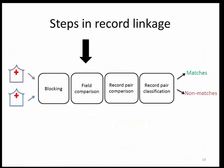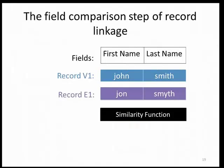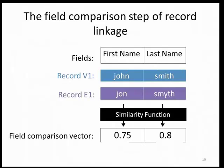Now we'll take a look at the field comparison step in record linkage. Records are composed of multiple fields containing identifying or quasi-identifying information about individuals. Here we see a sample record pair composed of two fields — first and last name — one record from each institution, and we examine this record pair to classify it as a match or non-match. In the field comparison step, a similarity function takes the field values as input and gives us a measure of the similarity of those two field values. The overall result is a field comparison vector containing a similarity measure for each field.